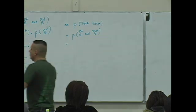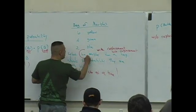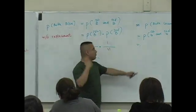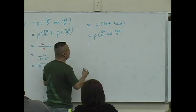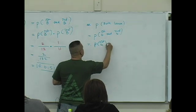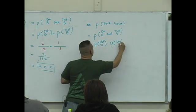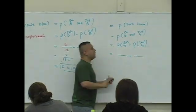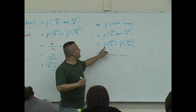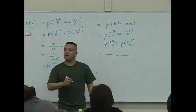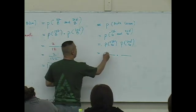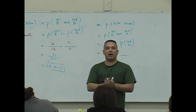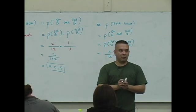How many items are you selecting? Remember I started the lecture by pointing that out — you're selecting two marbles, meaning this calls for the multiplication rule. So by definition, it's the probability the first is green times the probability that the second is green. And again, this is without replacement. You reach in the bag — what's the probability that that first marble is green? Four out of twelve.